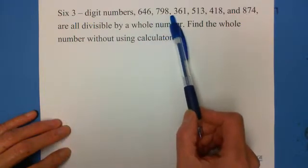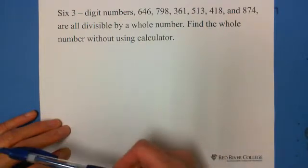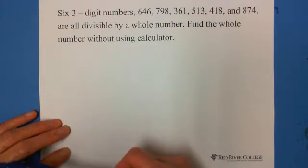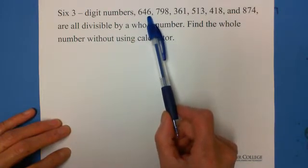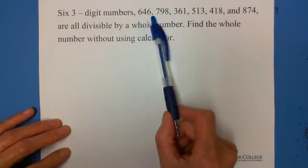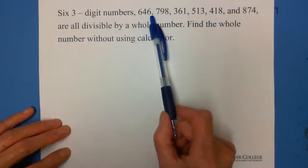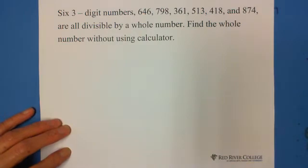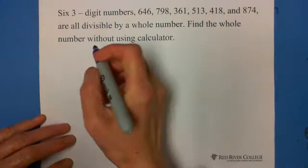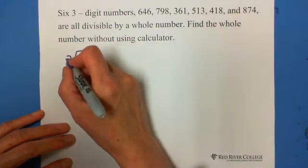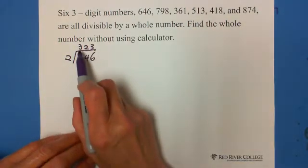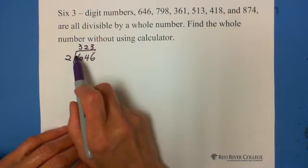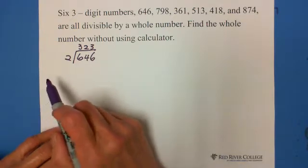But how these six numbers are related, we don't know. We need to do a little bit of research so that we can find this number. First, we look at 646. This number is an even number, it is divided by 2. After divided by 2, we got 323.